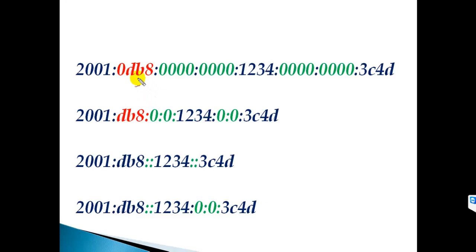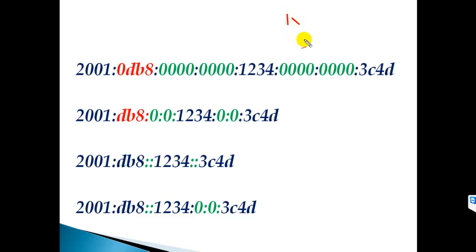Now let's look at how an IPv6 address actually looks. Here is a sample IPv6 address: 2001:0db8:0000:0000:0000:0000:1234:3c4d. By default, an IPv6 address is a 128-bit address written in hexadecimal format. There are 128 bits total, and each portion represents 16 bits.